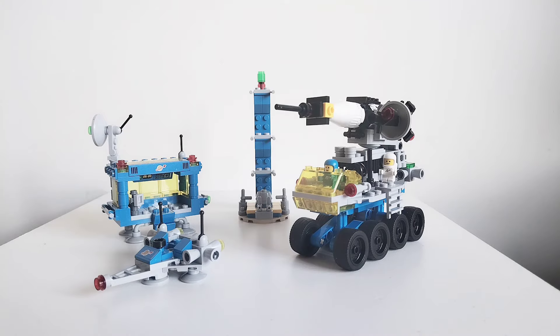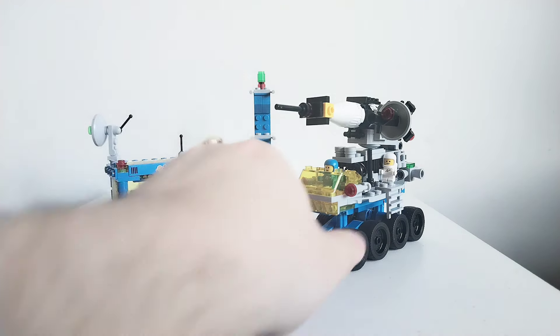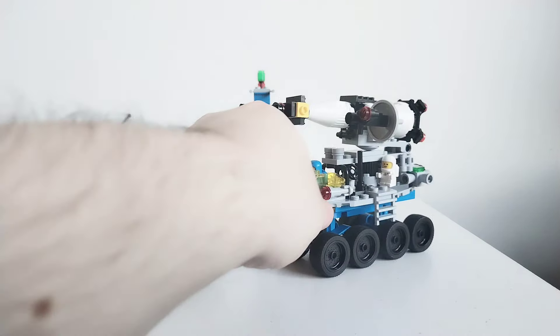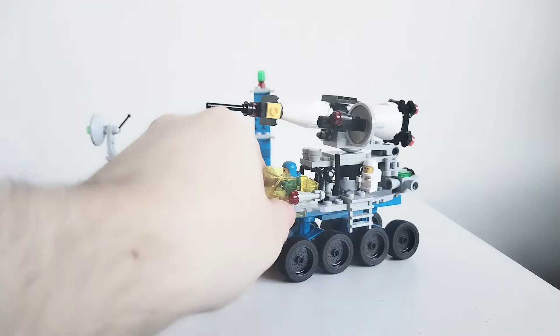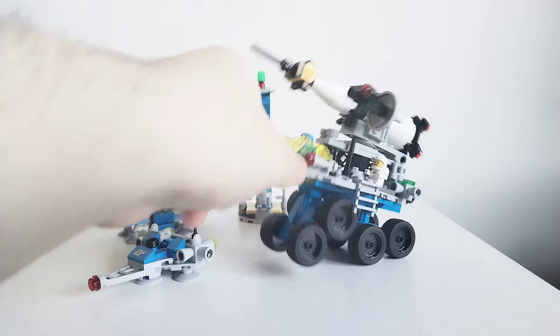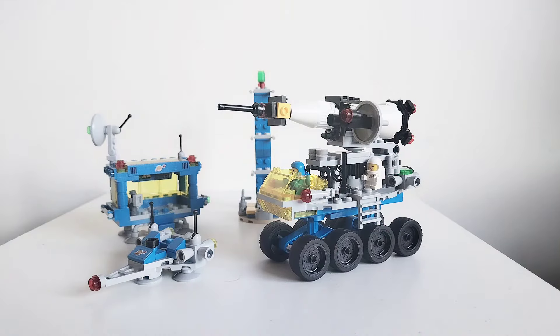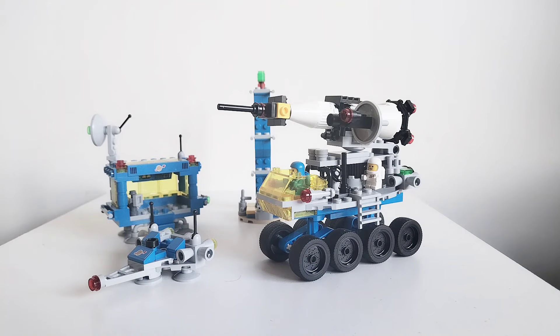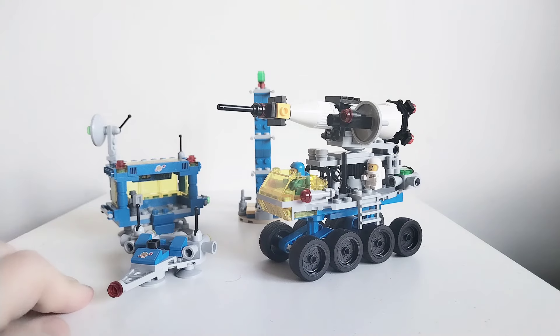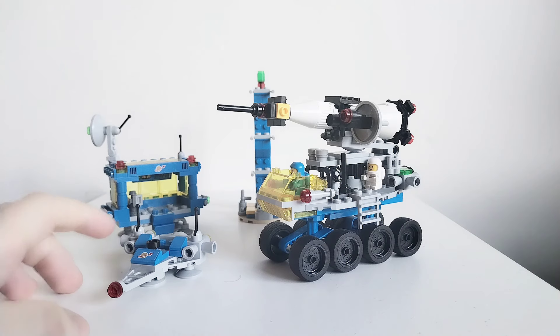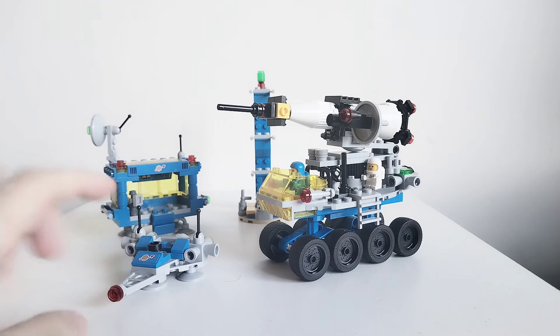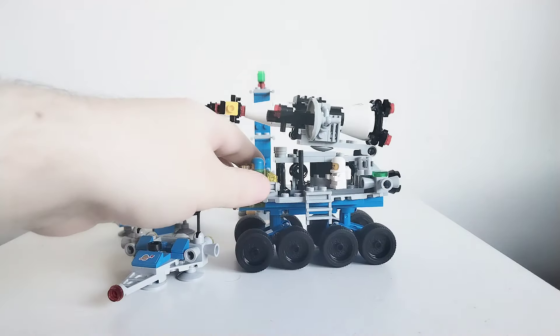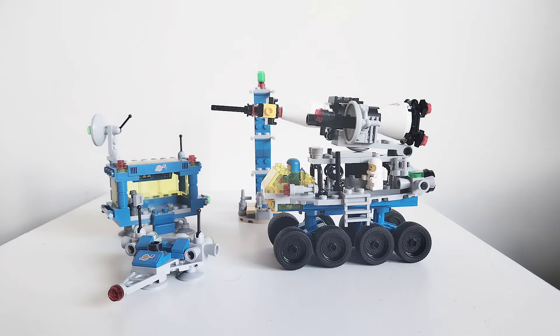I think the best part of this set is probably the buggy. I really love how they did the wheels and the suspension on the wheels so that you can have it at all different angles and it can drive over different terrains. The stickers in the set are included, so there is no prints for the classic space logo, which is a shame, but then they did that with the Blacktron Cruiser promo that was just stickers unfortunately as well.